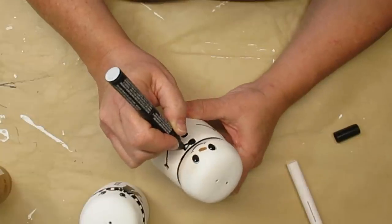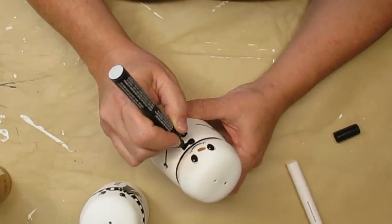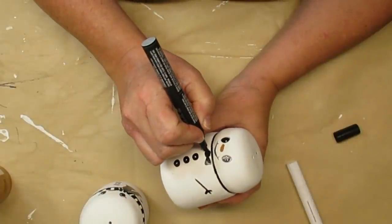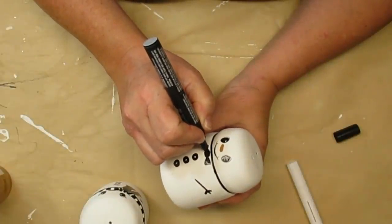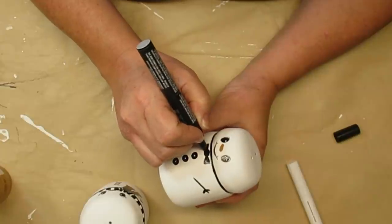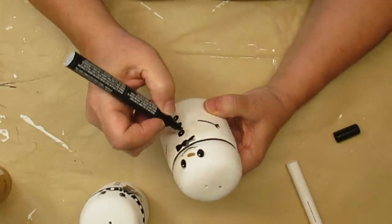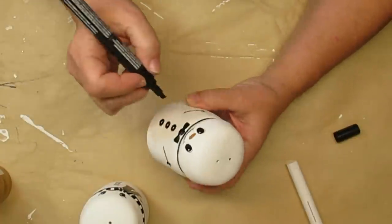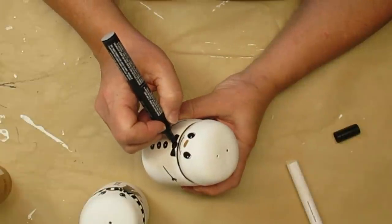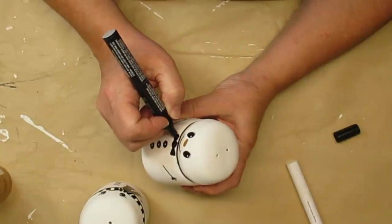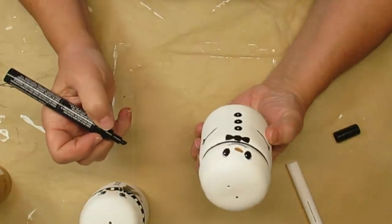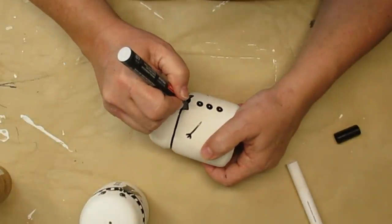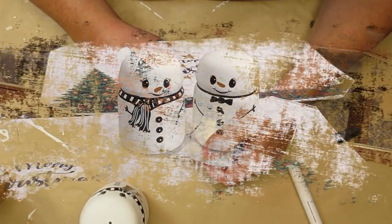I created a his and hers set. So for the little girl I just drew on a little checkered scarf and now for the little boy I'm going to give him a nice black bow tie. I also added some eyelashes to the little girl. I also gave them some stick arms as you can see here and some buttons down the front with a little bit of the chalk paint to accent them. I think these little guys turned out so adorable and Debbie if you're watching I hope you love them too.